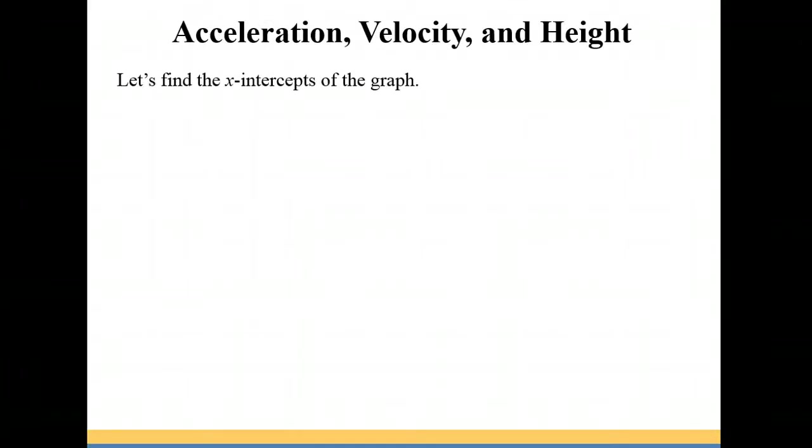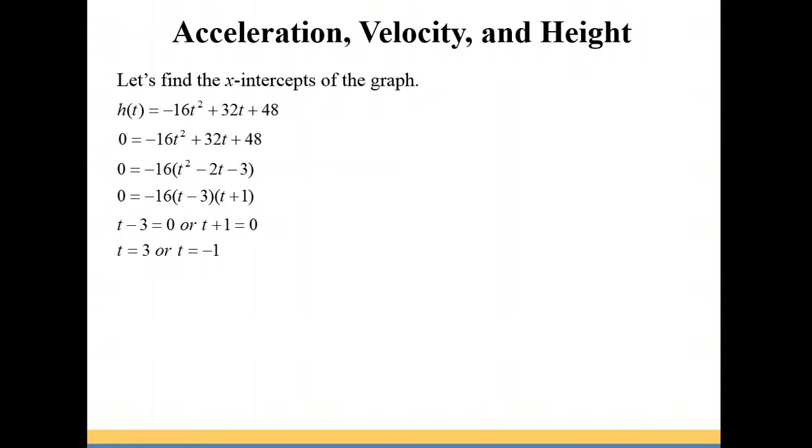Let's find the x-intercepts of this graph. So we're going to set the function equal to 0 and factor. So I see that negative 16 goes into each one of those terms. So I factored out the negative 16. And then we're going to factor the t squared minus 2t minus 3. So it becomes t minus 3 times t plus 1 times our negative 16. Now the t minus 3 could equal 0 or the t plus 1 could equal 0 and satisfy the equation. So at t equals 3 seconds or t equals negative 1 second you have your x-intercepts of the graph.